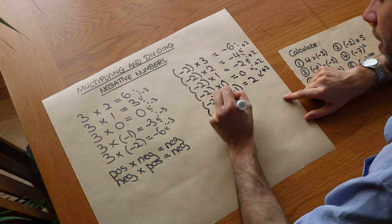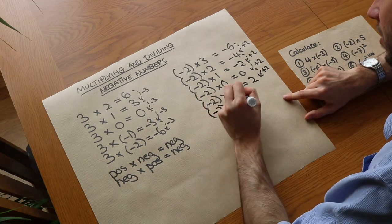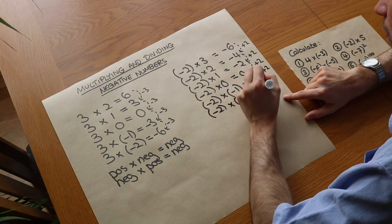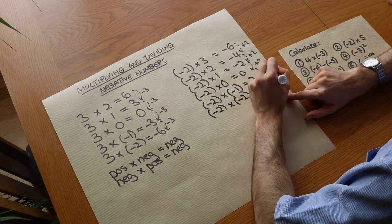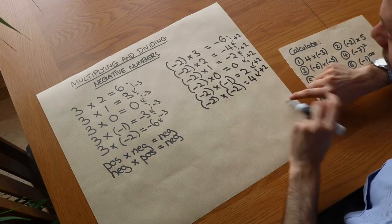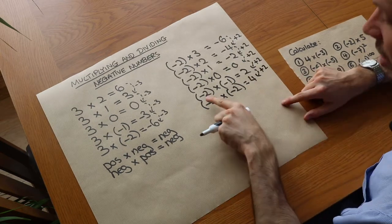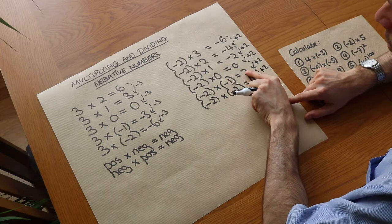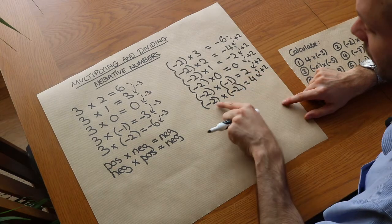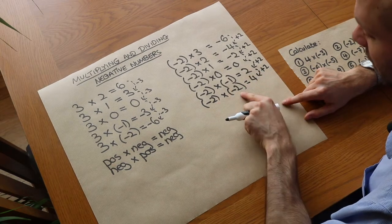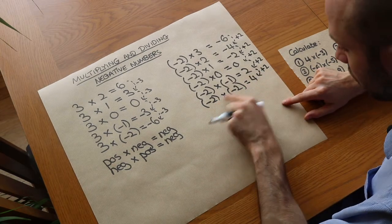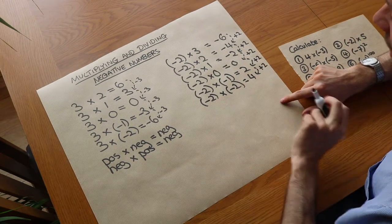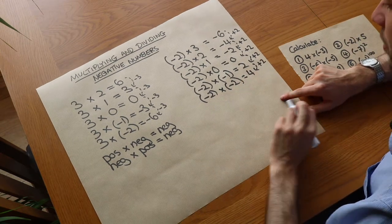Going one further: minus 2 times minus 2 would be 4, because that's going up by 2 again. So we can see that when we have negative times negative, it actually gives you a positive number. If you have minus 2 times minus 2, you just do 2 times 2 which is 4, and it's going to be positive, because negative times negative is positive.